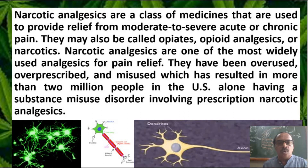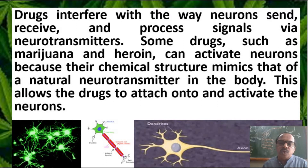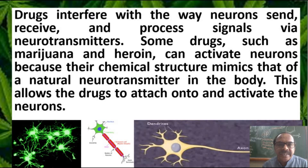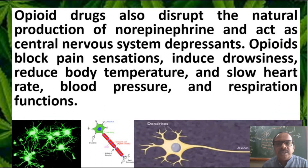Narcotic analgesics have been overused, overprescribed, misused, and abused all over the world, with the U.S. alone having significant substance misuse disorder involving prescription narcotic analgesics. These drugs interfere with neurons and the nervous system in various ways — affecting how neurons send messages, receive messages, and process signals via neurotransmitters. Some drugs, such as marijuana and heroin, can activate neurons because their chemical structure is similar to that of natural neurotransmitters, attaching to cells and activating neurons, thereby interrupting the nervous system.